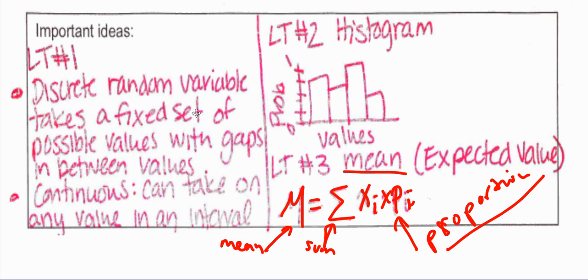If you surveyed a bunch of families to find out how many people are in there, you either have maybe 1, 2, 3, 4, 5, 6, 10, 8, maybe 20 different people in your family, which are all a fixed set of possible values. Continuous can take on any value in an interval.